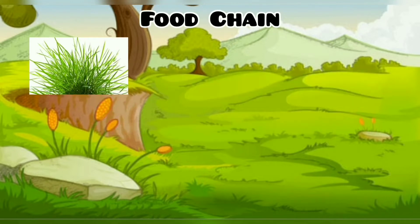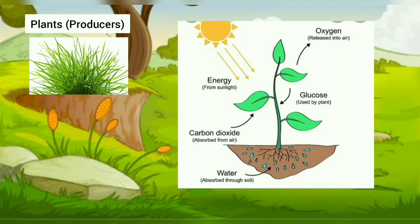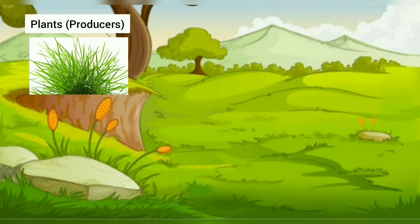The first thing in the food chain are the plants. They are called producers because they make their own food by the process of photosynthesis with the help of the sun. The sun and water are very important for the food chain. Without them, plants would not grow.